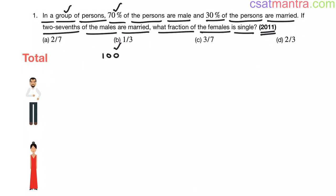Now, 70% of the persons are male. 70% of 100, that is 70 by 100 into 100. 100, 100 cancel, that is simply 70. Now, how many will be the females? Total minus number of males, that is equal to 30.